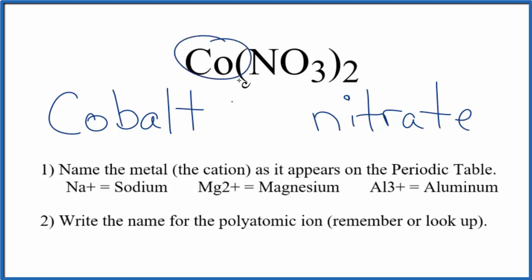But cobalt, we said that was a transition metal, so it can have a different charge depending on what it's bonded to. Here it's bonded to the nitrate ion, actually two of them. And the whole nitrate ion has a charge of one minus. Good one to remember. We have two of them. Two times one minus, that's two minus. The cobalt has to be two plus.